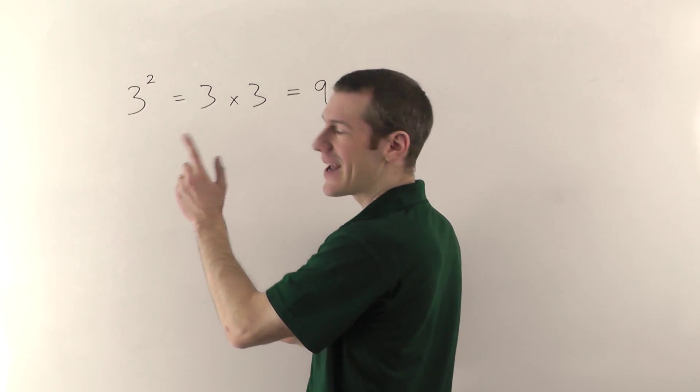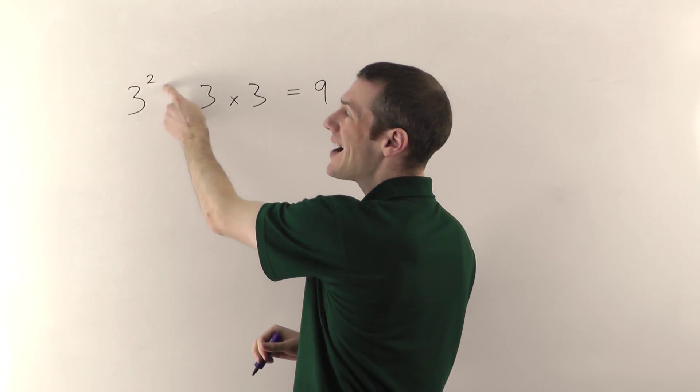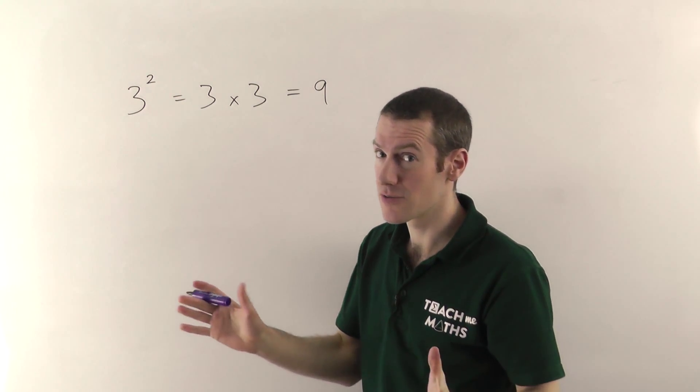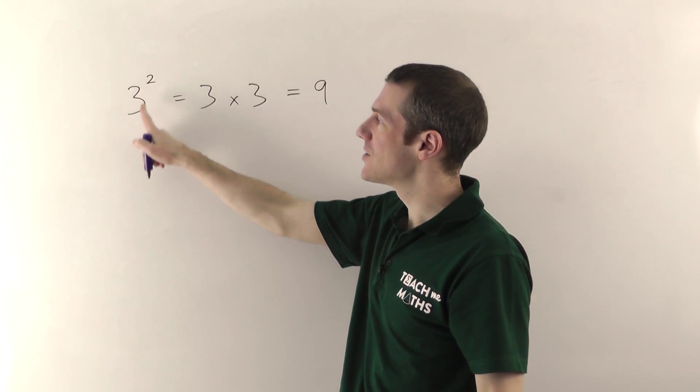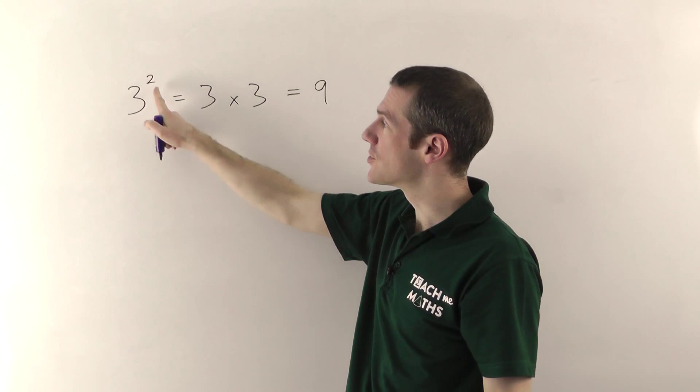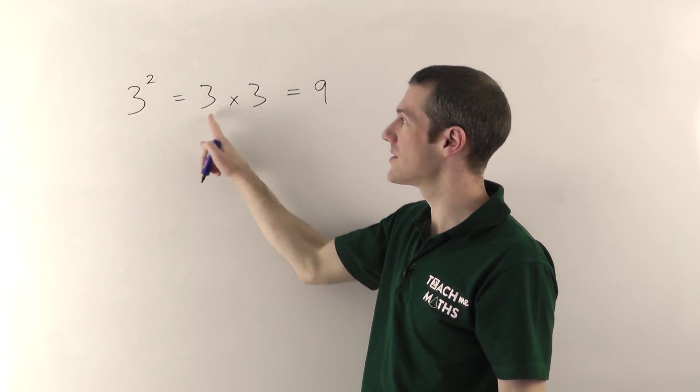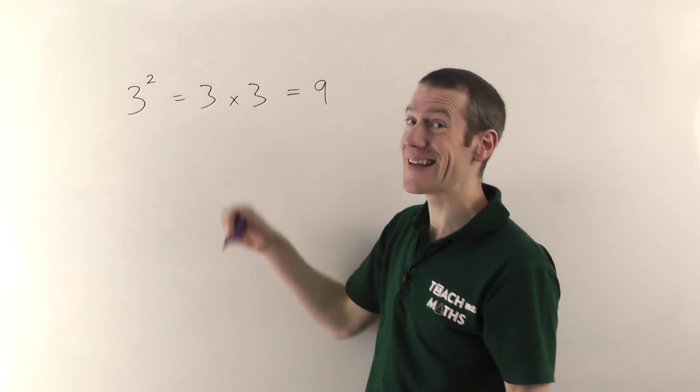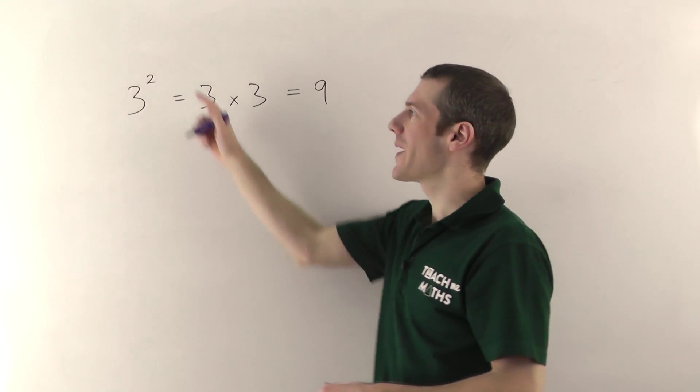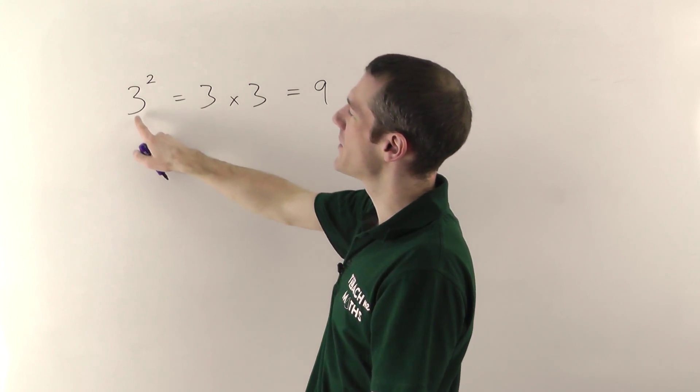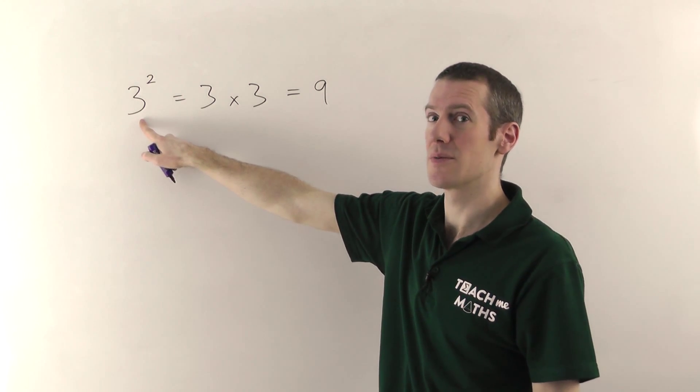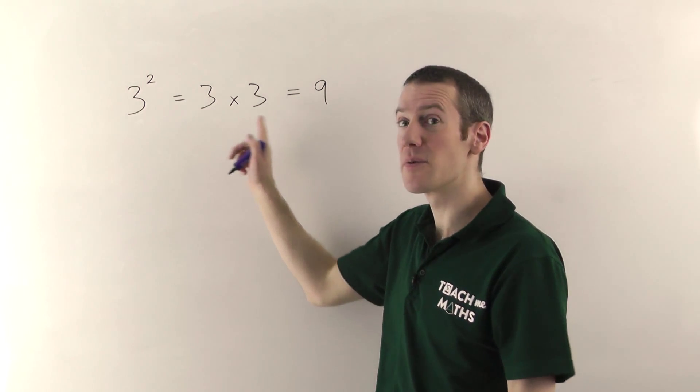Now just be careful here, a lot of people when they see 3 squared they do 3 times 2 and it's not. 3 times 2 would be 6, but this is 9. The squared is not multiplying the 3. The 2 here tells you how many 3's, in this case two of them, are multiplying each other. With squaring and cubing, the power tells you how many of them multiply each other. This number here, the 3, is called the base number and you should only have multiples of the base number.